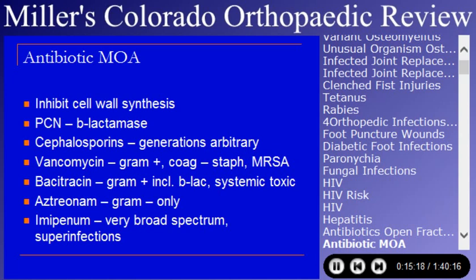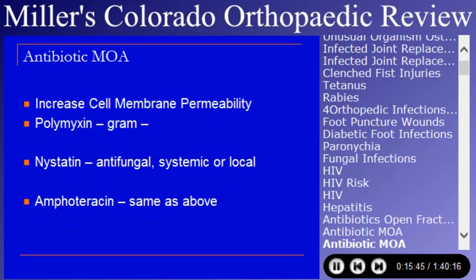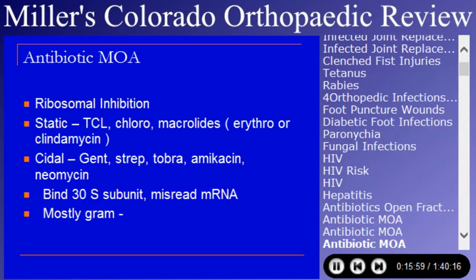Antibiotic mechanisms of action — mostly medical school material. Cephalosporins inhibit cell wall synthesis, as do vancomycin and bacitracin. Beta-lactamase resistance is known with penicillin. Amphotericin works by increasing cell wall permeability and is used in fungal belt areas or for ICU patients. Ribosomal inhibition: gentamicin and tobramycin — tobramycin especially used in making antibiotic beads due to good elution characteristics. They can bind the 30S, 50S, 70S, or 80S subunits and cause a misread of messenger RNA. Ribosomal inhibition drugs are mostly gram-negative drugs.